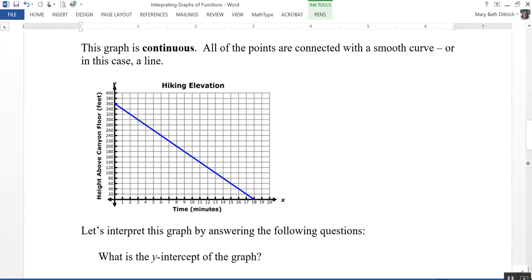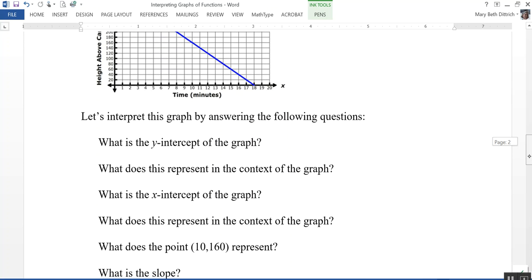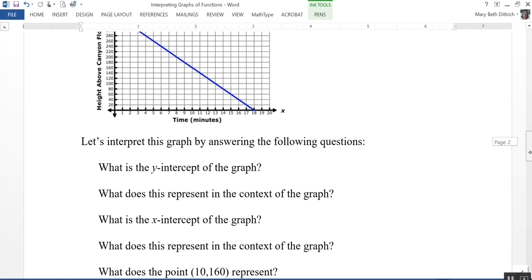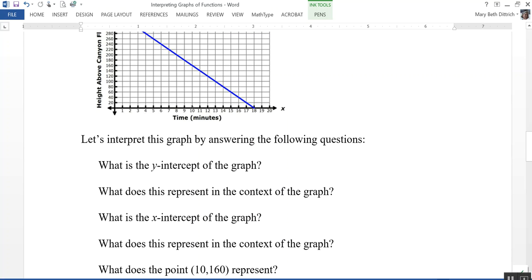What does the point 10, 160 represent? So let's find that point right here. So the point 10, 160 would be approximately right here. That means that after 10 minutes of hiking, the hiker is 160 feet above the canyon floor.